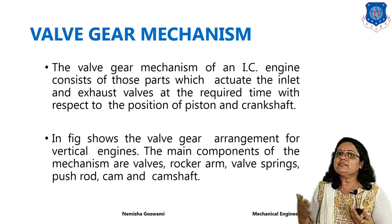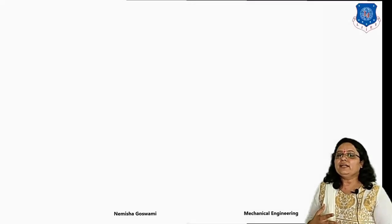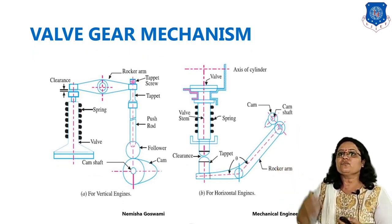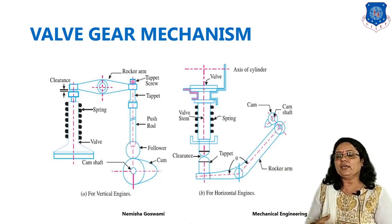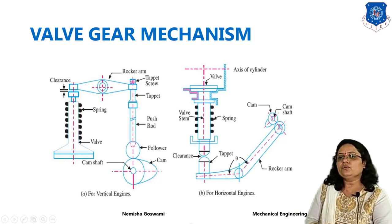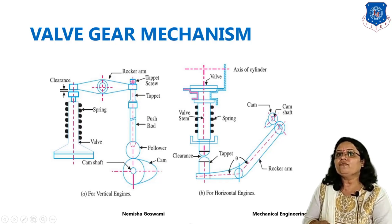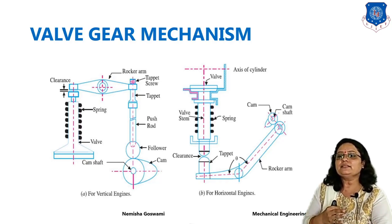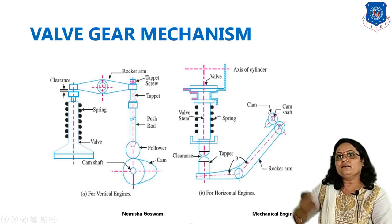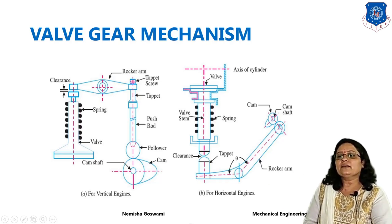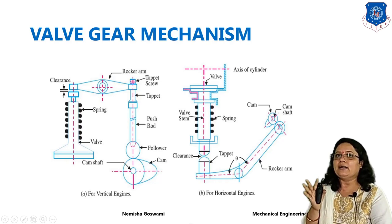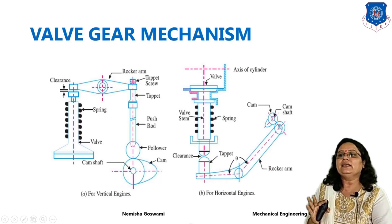In the next diagram you can see the valve gear mechanism for vertical engines and horizontal engines. Two separate diagrams are shown for each. The basic fundamental here is the cam and follower mechanism, which we have already seen in theory of machines. The valve gear mechanism consists of a cam-follower mechanism, a push rod, an adjusting screw, a rocker arm, and finally a spring and valve.